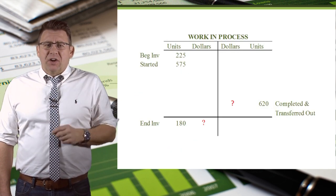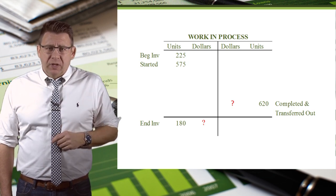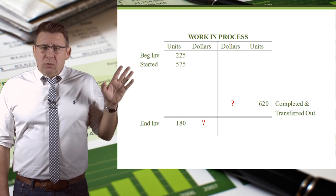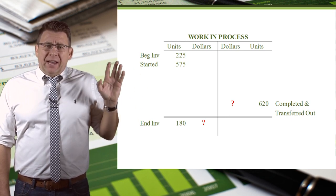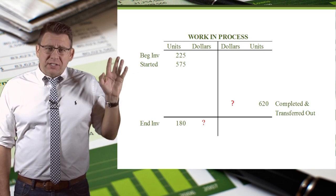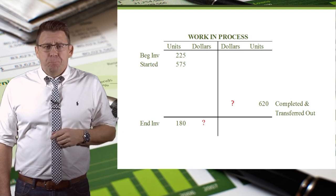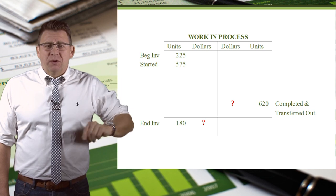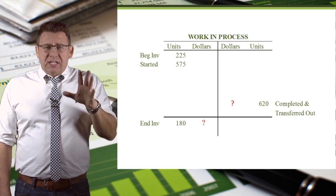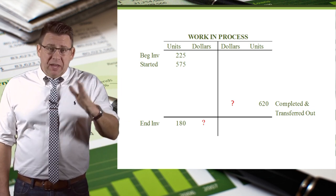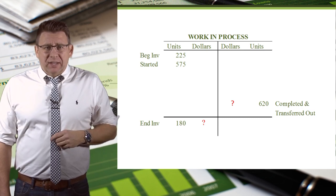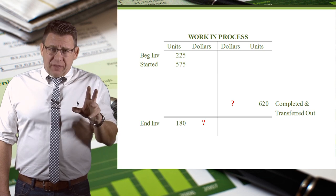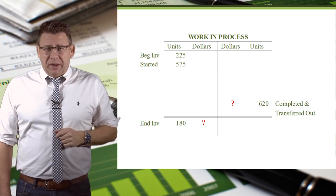Another way to look at this is with the WIP T-account. Visually, this is what's happening. You see beginning work in process and the units started on the debit side. The ending units are 180, and that's also on the debit side. 620 units were completed and transferred out, and that's on the credit side. These are just units — we will add dollars to them as we work through the remaining steps.